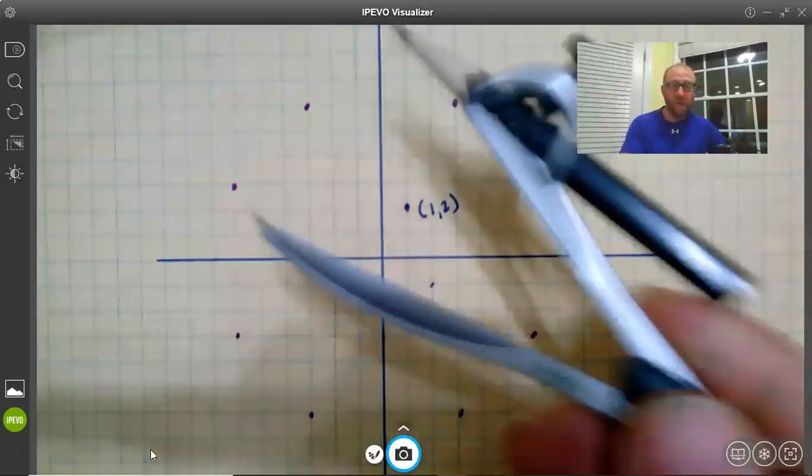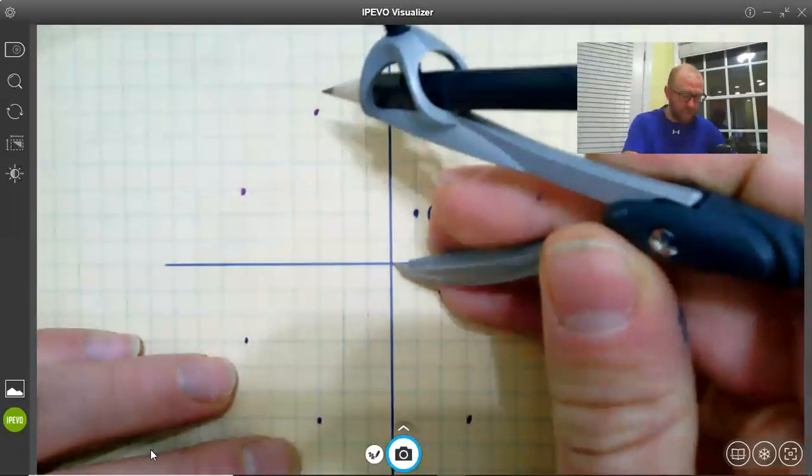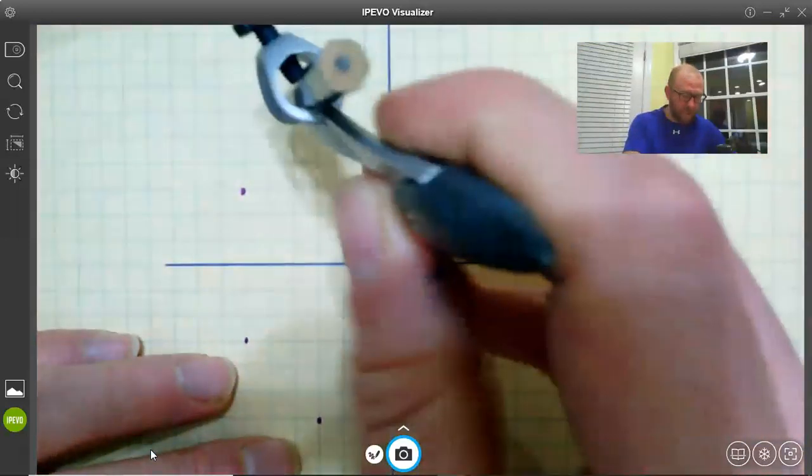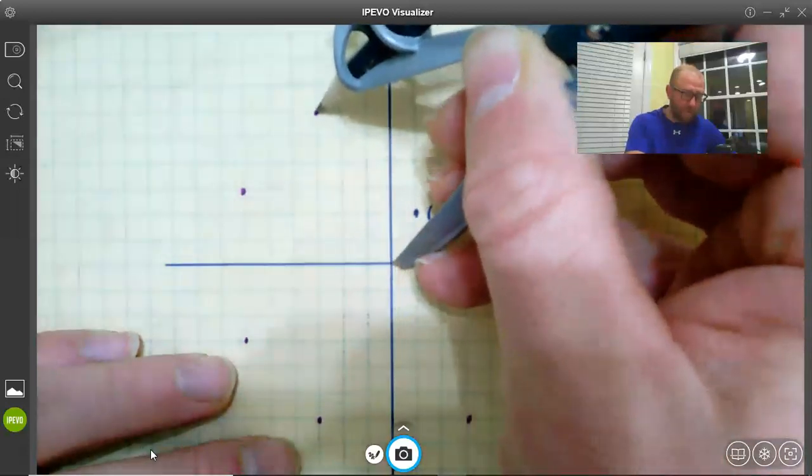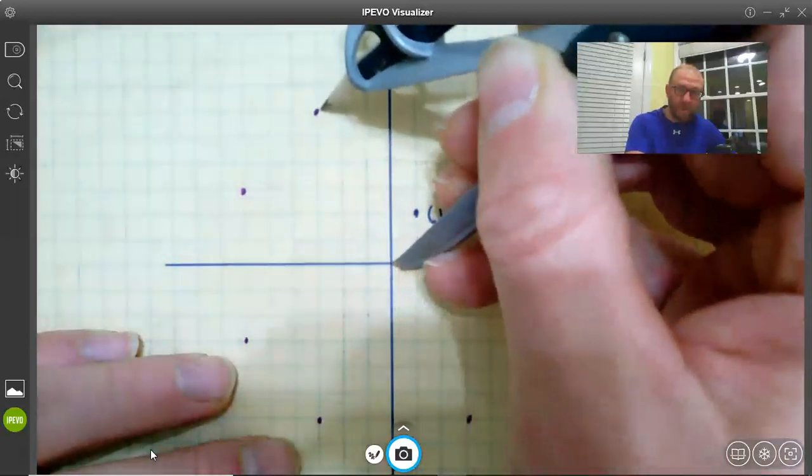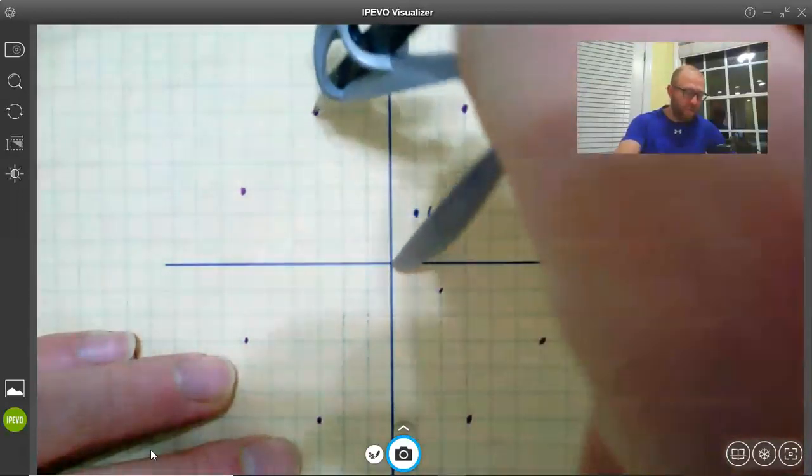So like, what you do here - I'll take my compass, I'm going to put it right here in the center, and I'm going to set the compass length right there, and I'm just going to draw the circle.